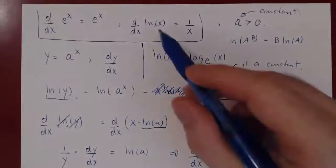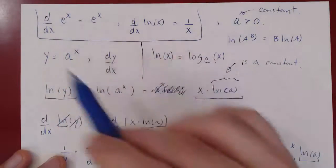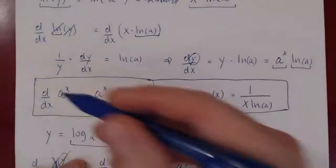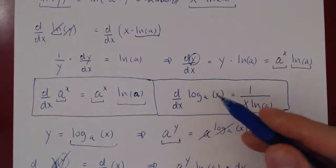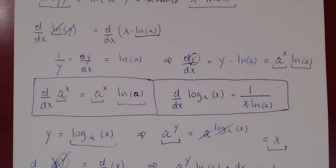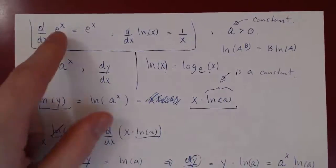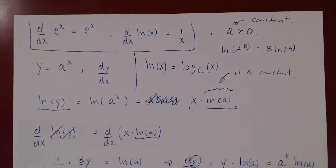So it's really nice. The derivative of the exponential function base e is itself; the derivative of ln of x is 1 over x. When you change the base, the derivative of the exponential function is itself times ln of the base, and the derivative of the logarithmic function is 1 over x times ln of the base. In our next video, we will consider examples involving power rules, product rules, chain rules, and quotient rules.